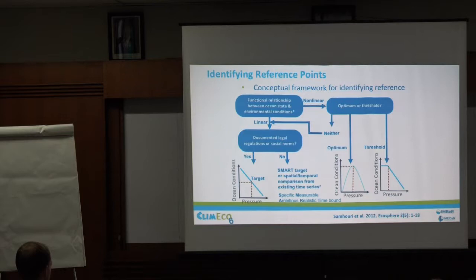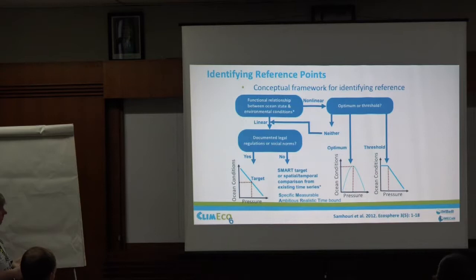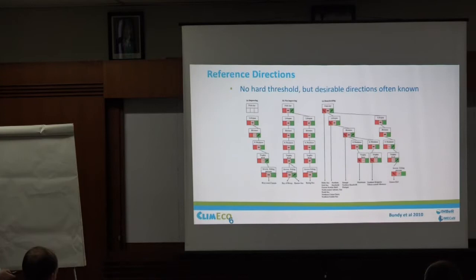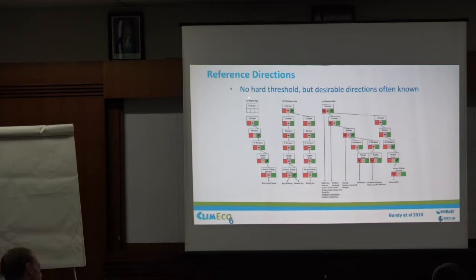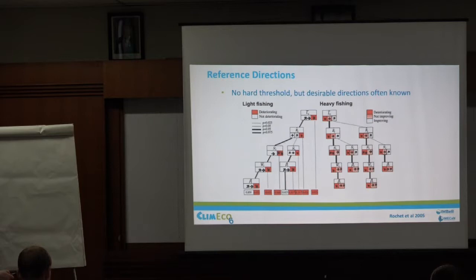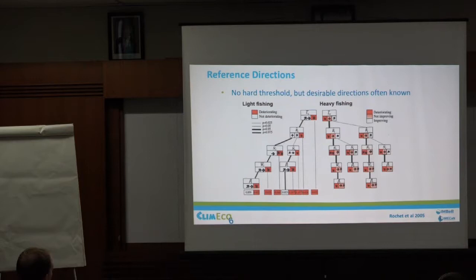Another approach is identifying whether reference points should be linear targets or whether there's information to identify an optimum or threshold. Less in the systems world worries about optima; more worry about thresholds. In terms of reference directions rather than reference points, this is an example from Alida Bundy, who went through around 25 different indicators for multiple systems around the world, looking at whether they showed no change, improving, or declining. Under light fishing, different indicators were either not changing or improving; under heavy fishing, far more were declining. By bringing those combinations together, you could unpack what was happening to a particular ecosystem.